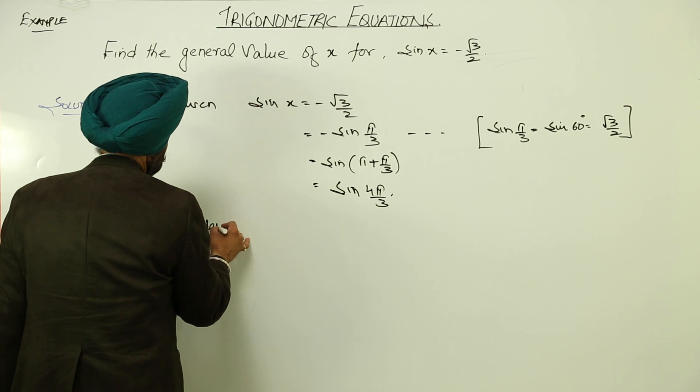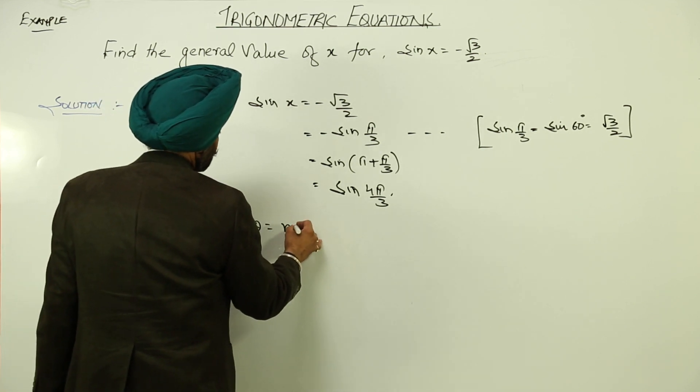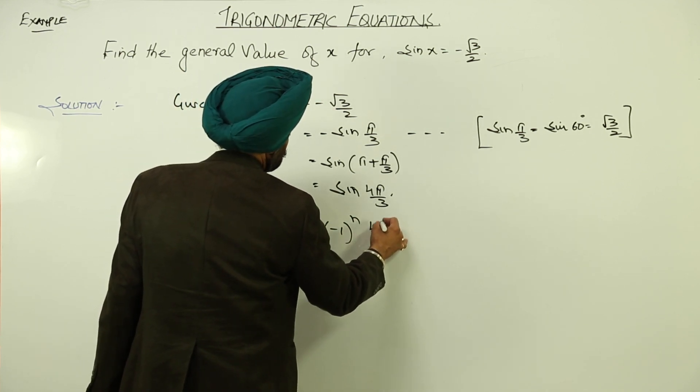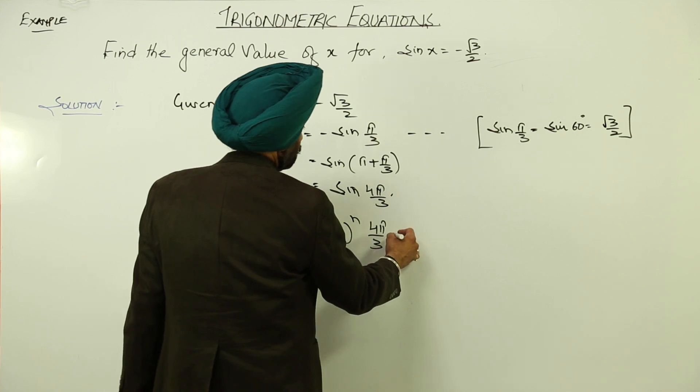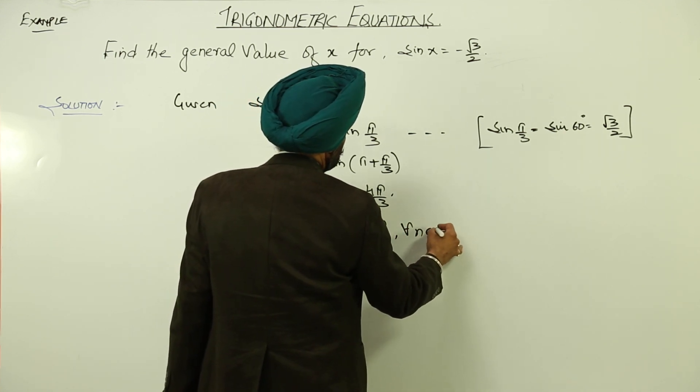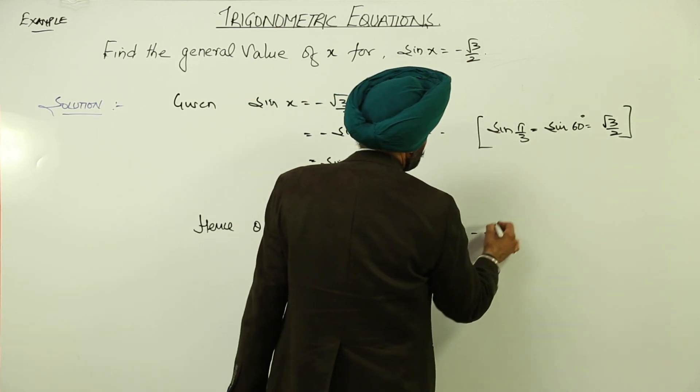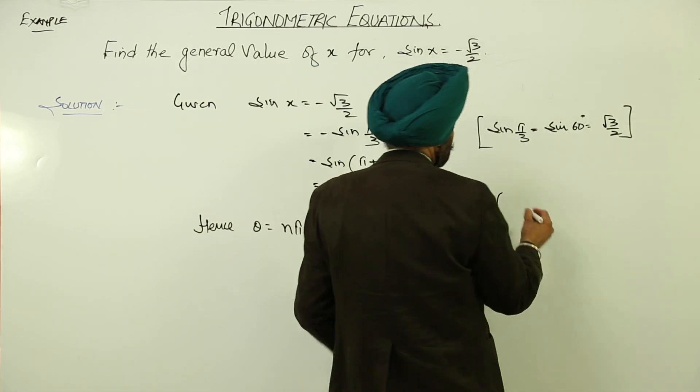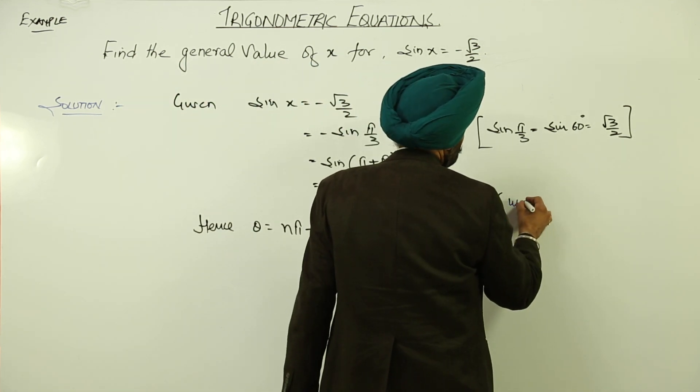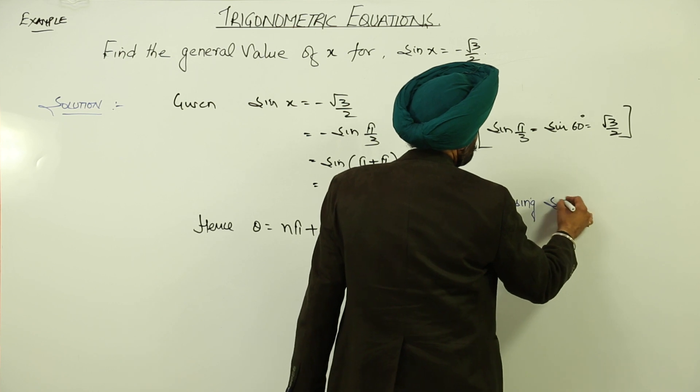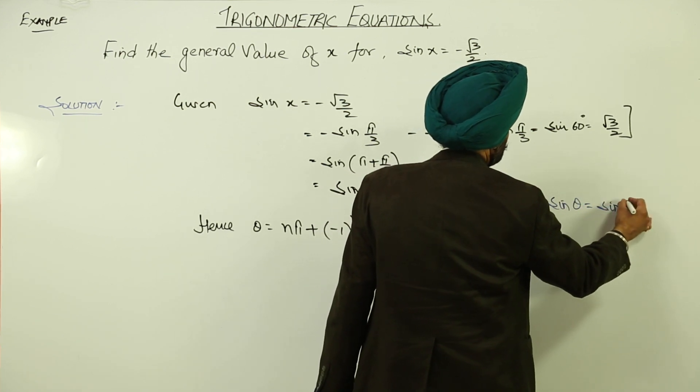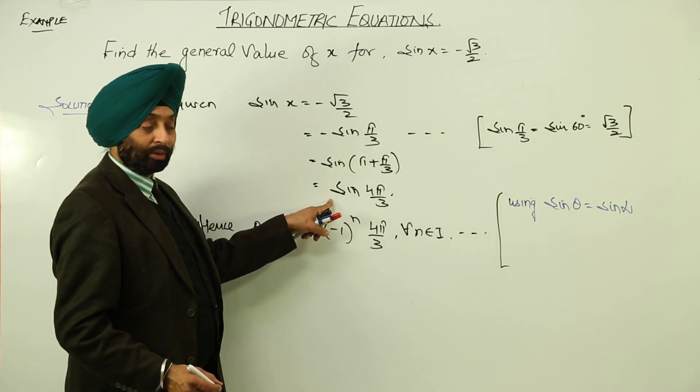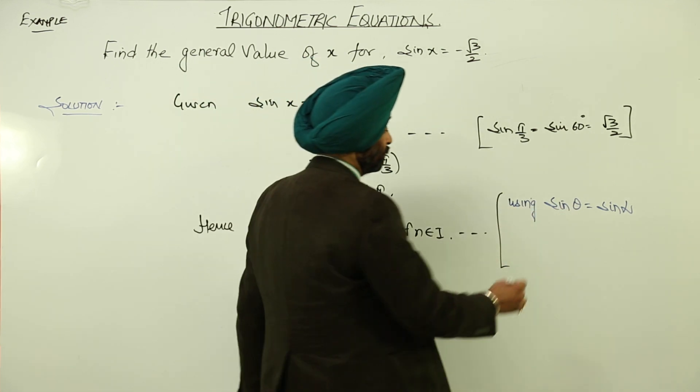Hence, theta equals n pi plus negative 1 raised to power n times 4 pi by 3 for all values of n belongs to integers. We have just used sin theta equals sin alpha. Here we are having sin x equals sin 4 pi by 3.